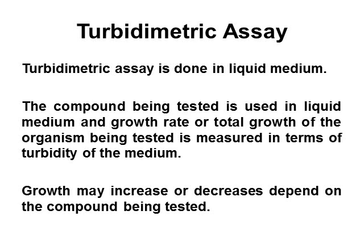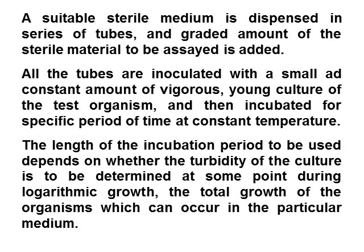After discussing diffusion assay, let us discuss other types of bioassay. In turbidometric assay, the assay is performed in liquid medium. The compound used for assay is placed in liquid medium, and the growth rate or total growth of the organism used for the test is measured in terms of turbidity of the medium. Growth may increase or decrease depending on the compound used for the test. A suitable sterile medium is dispensed in a series of tubes, and graded amounts of the sterile material to be assayed are added. All tubes are inoculated with a small and constant amount of a vigorous, young culture of the test organism, and then incubated for a specific period at a constant temperature. The length of the incubation period depends on whether the turbidity of the culture is to be determined at some point during logarithmic growth or at the total growth of the organisms that can occur in a particular medium.